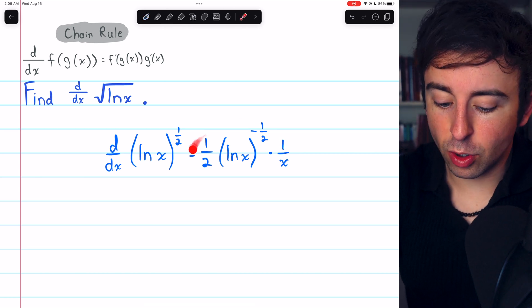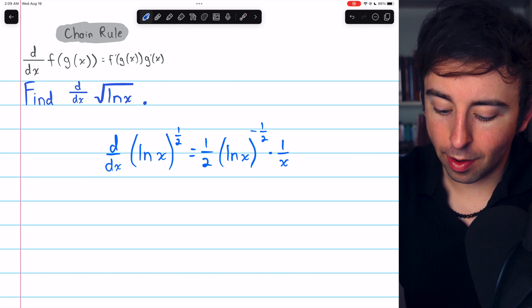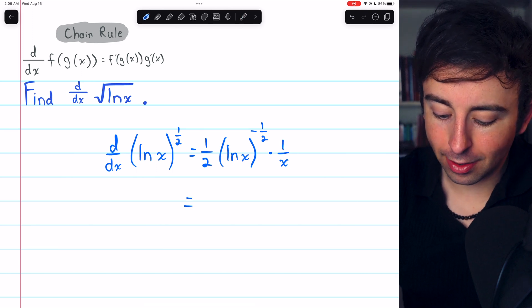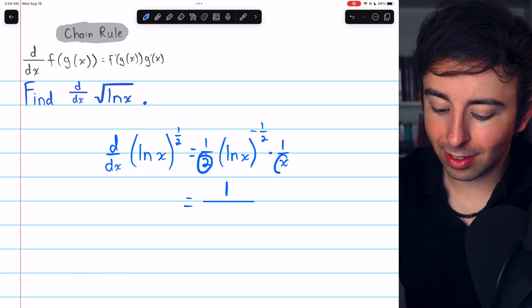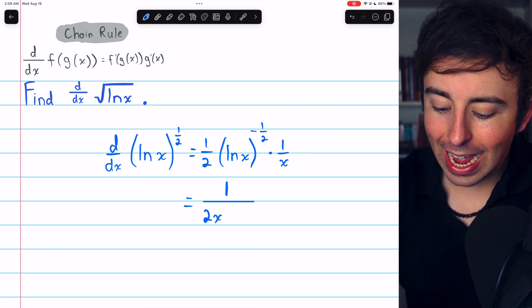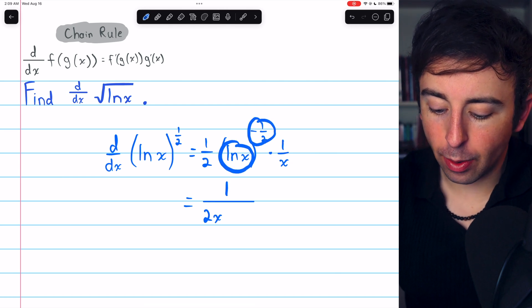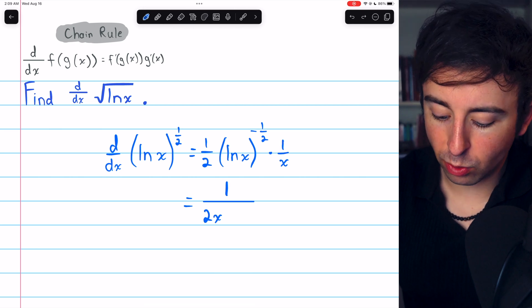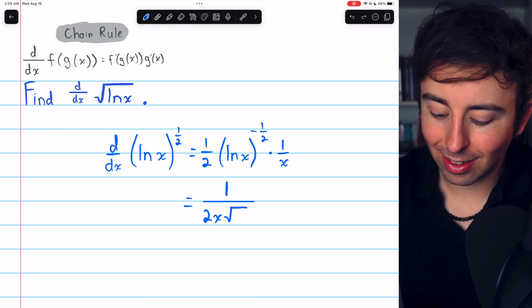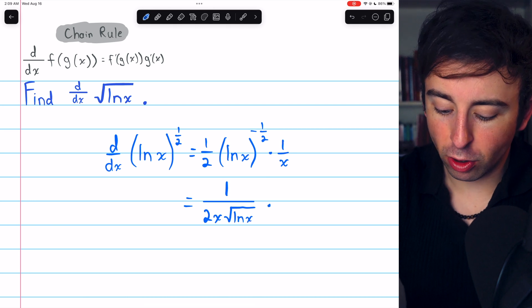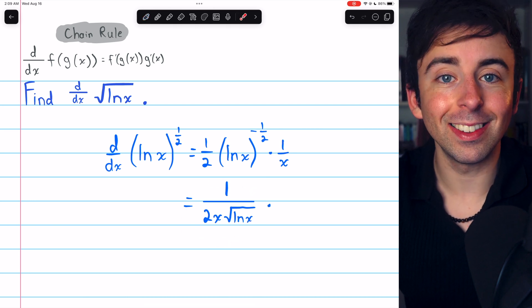And there you go. That is the derivative of the square root of the natural log of x. We could, of course, rewrite it some. In the denominator, we have 2, as well as the x. So we could just put 2x in the denominator. And ln x has a negative power, so it's also in the denominator. And since the power is 1 half, we could write that as a square root. So square root of ln x. And that's just another way to write the derivative.